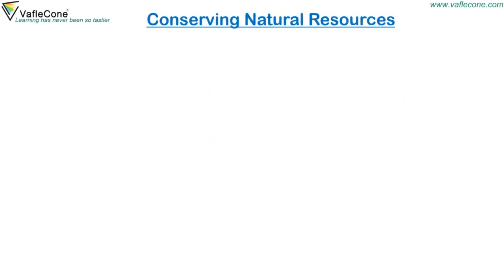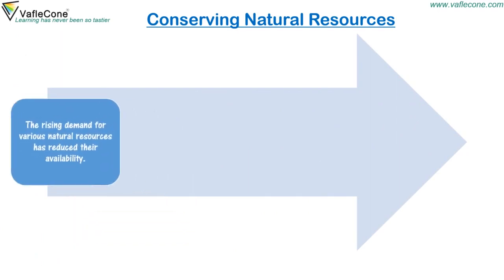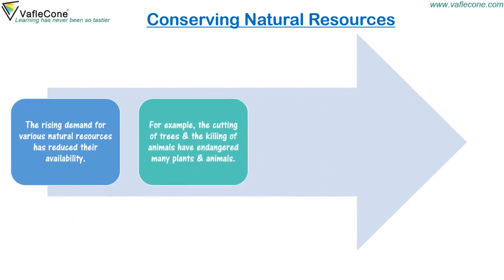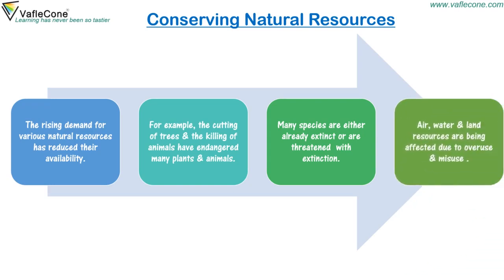The rising demand for various natural resources has reduced their availability. For example, the cutting of trees and killing of animals have endangered many plants and animals. Many species are either already extinct or are threatened with extinction. Air, water and land resources are being affected due to overuse and misuse.